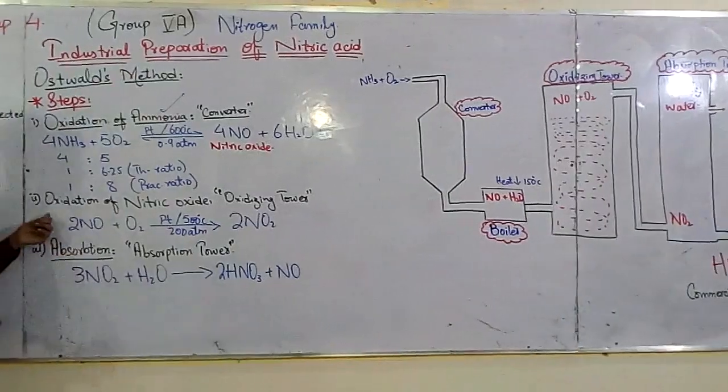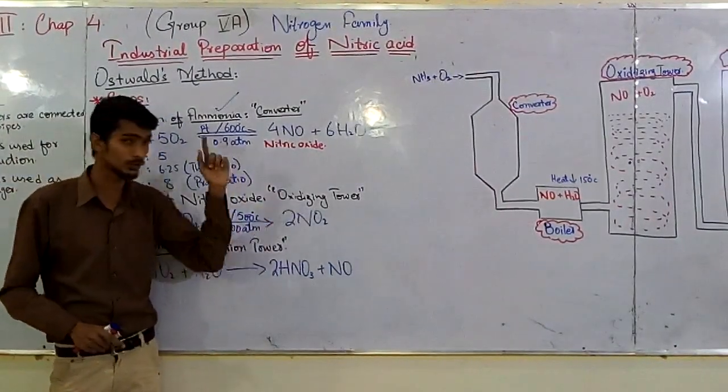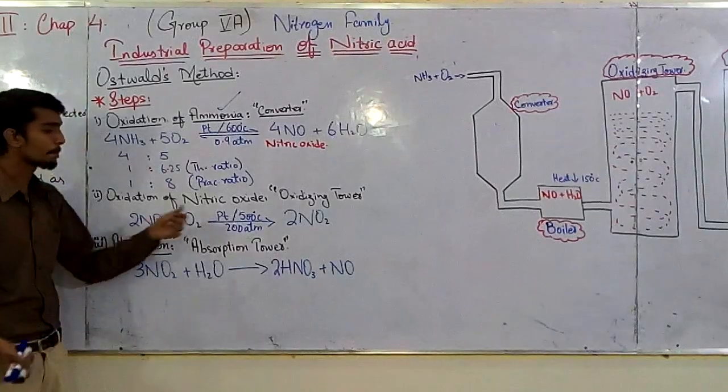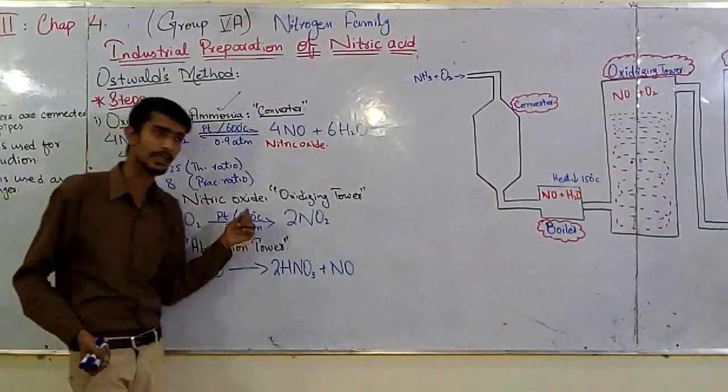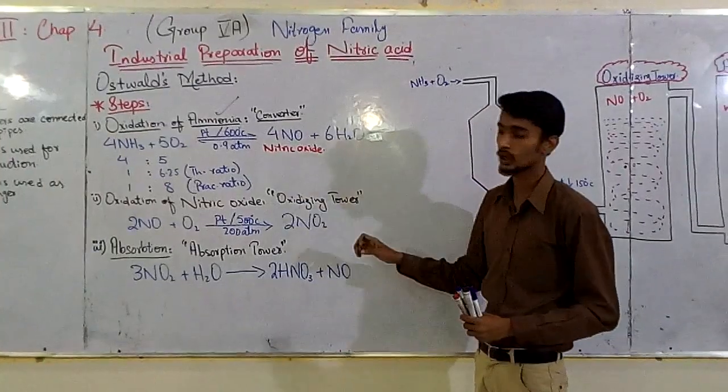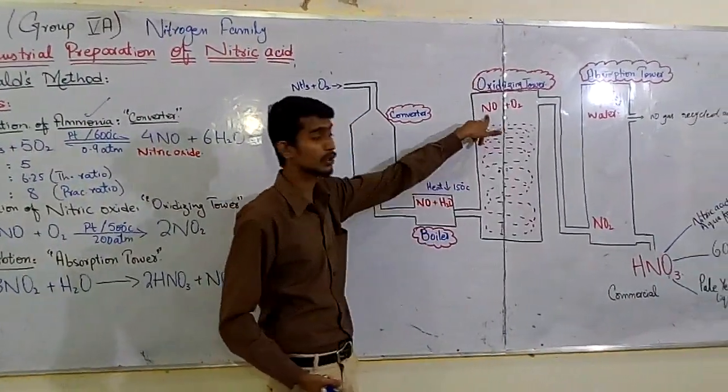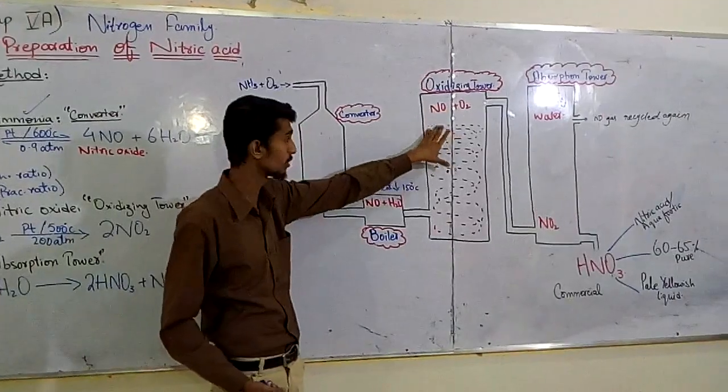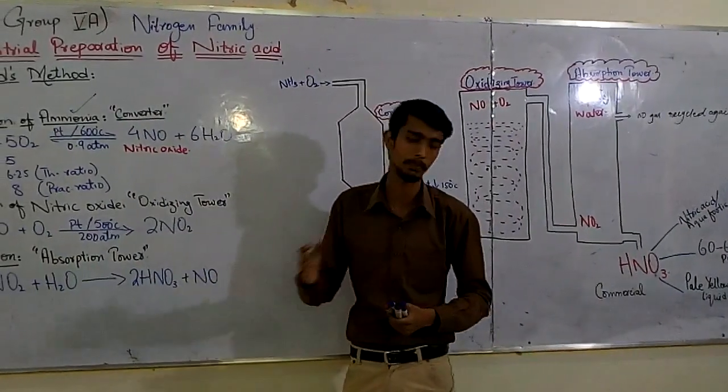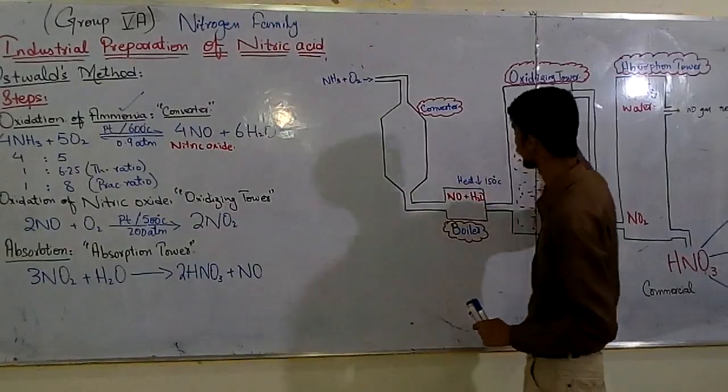The next step is oxidation of nitric oxide. We need to add oxygen. The oxygen is added in the oxidizer. We get nitrogen dioxide. Air must be sorted from impurities before use.